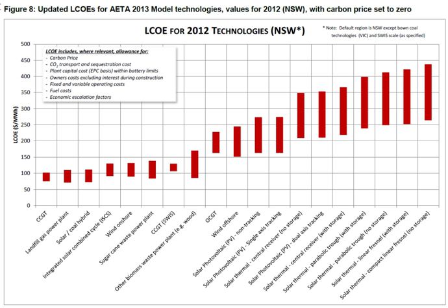The levelized cost of electricity is given by: LCOE = Sum of costs over lifetime / Sum of electrical energy produced over lifetime.